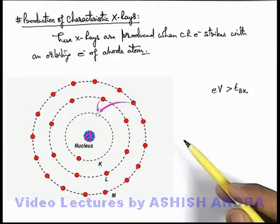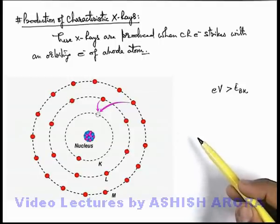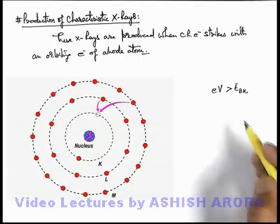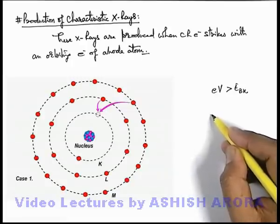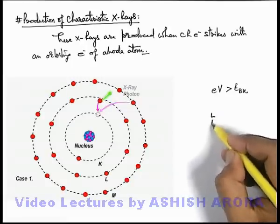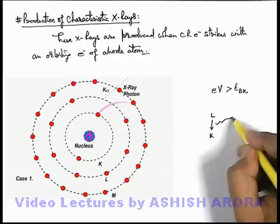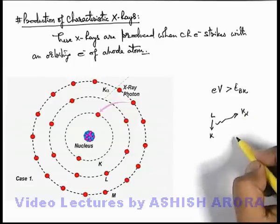These are called characteristic x-rays because the emitted photons have some specific wavelengths. So in this situation, if an electron transitions from the L-shell to the K-shell — which is just the adjoining shell — the emitted photon is termed as K-alpha x-ray.